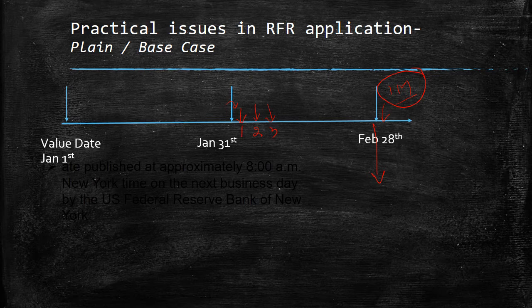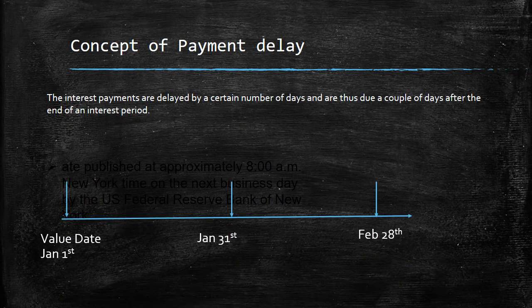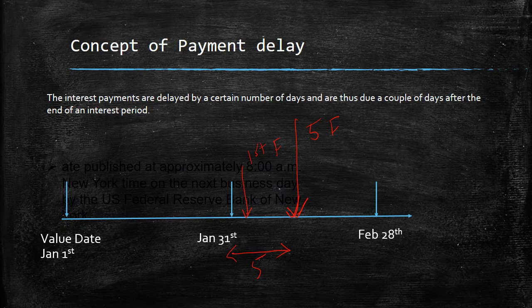There are several ways this problem was mitigated. The first is the concept of payment delay. In this concept, we know that on the 1st of Feb we are going to get the rate for Jan 31st. As part of this approach, grace days — for example 5 days — are given, and only on Feb 5th does the borrower have to pay. So he gets enough time to understand what the January schedule payment looks like. This is one approach which can be mutually agreed upon by the borrower and the lender.